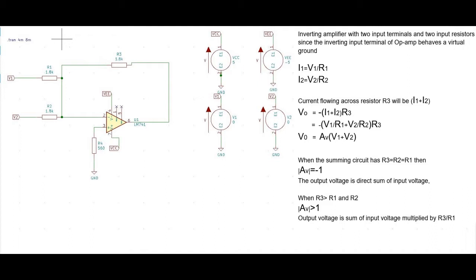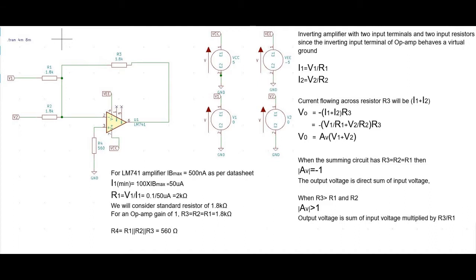In this example, for an LM741 amplifier, according to the datasheet, IP max is equal to 500 nanoamperes. So I1 minimum will be equal to 100 × 500 nanoamperes, which equals 50 microamperes. Based on this current value we can calculate R1: R1 = V1 / I1_min, which equals 2 kilohms.